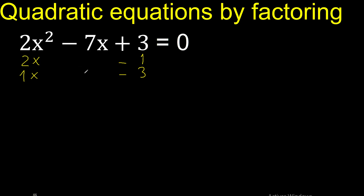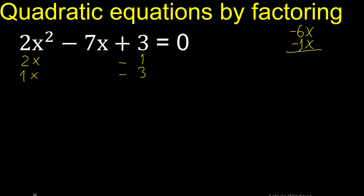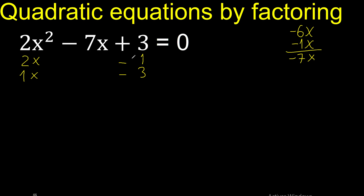Let's analyze if it is correct. 2 multiplied by minus 3 is minus 6, x. 1 multiplied by minus 1 is minus 1, x. That gives minus 7x. Therefore it is correct.